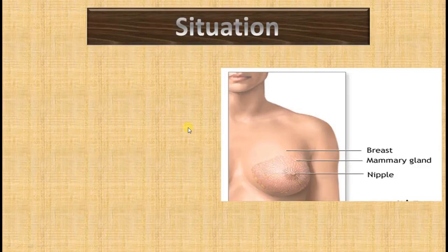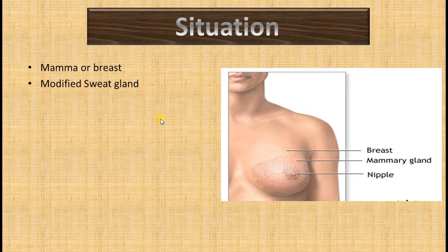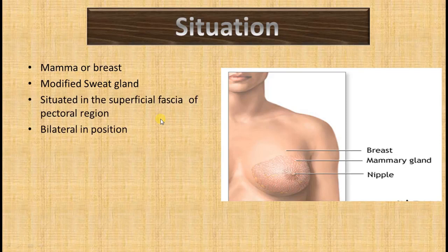Where is the breast situated? The mammary gland is simply called the breast. It is bilateral in position and is also a modified sweat gland. It is situated in the superficial fascia of the pectoral region. Remember, even though it is a gland, there is no capsule investing it like other glands such as salivary glands or endocrine glands.